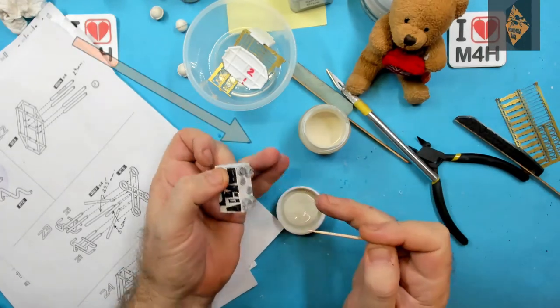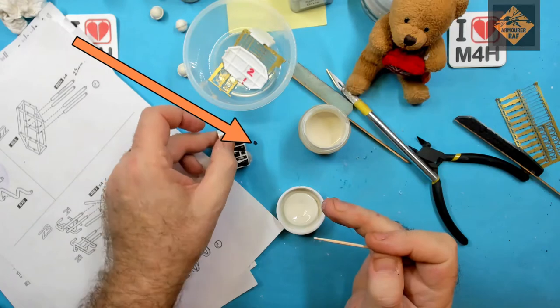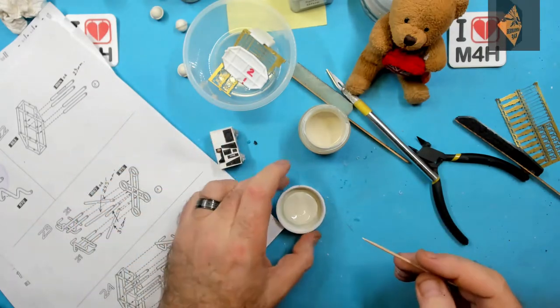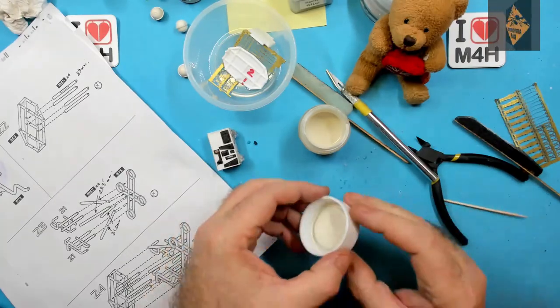Here you can see that I knocked off one of the greeblies off of Bob. I did this several times during this session, so I just glued them back on.